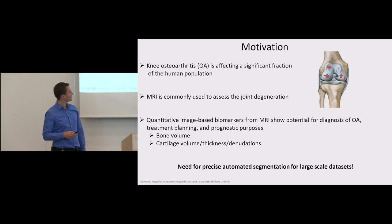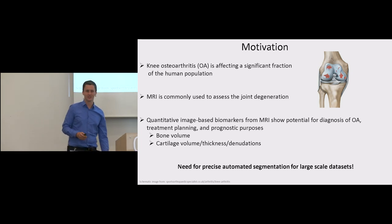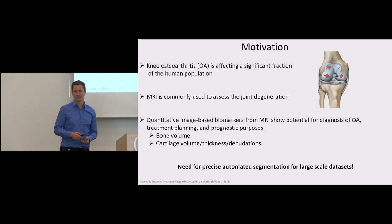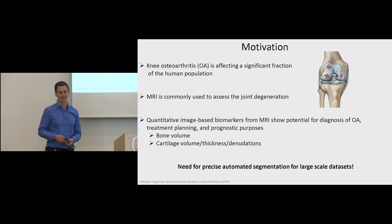However, automated methods are needed to handle large-scale data sets such as data from the Osteoarthritis Initiative or OAI which contains 50,000 MRIs of different knees for several time points. If a single human had to segment all of these images it would take 50,000 hours or 24 years working full-time. So that's why segmentation of knees has always been important.